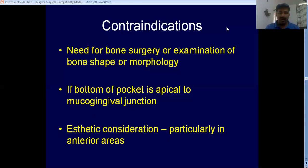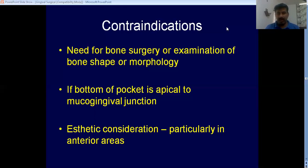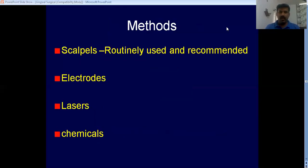Especially in the lower anterior region, removing the pocket by means of gingivectomy is contraindicated. Now, what are the different methods by which you can do gingivectomy? You have gingivectomy knives and scalpels — that is the routinely done, common, and most recommended method. Then you can do it by means of electrosurgery.